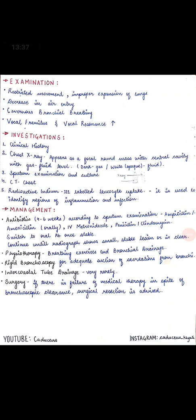Fourth is intercostal tube drainage, which is done very rarely — only if sputum or fluid accumulates in the lungs. A tube is inserted between the intercostal ribs to drain the fluid. The last option is surgery: if bronchoscopy fails to clear the secretions and the condition does not improve, the affected part where the lung abscess is located is surgically removed — surgical resection.